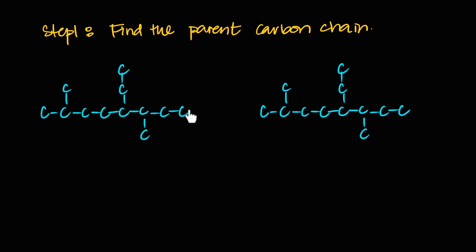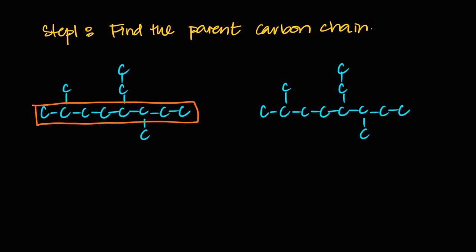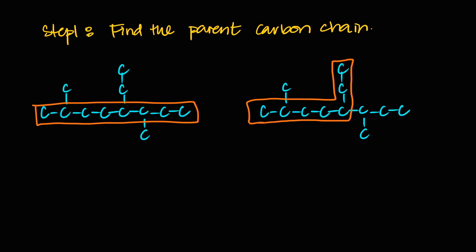For example, starting from one end I can count eight carbons, or seven another way, or seven a third way. The longest chain — highlighted here — is the eight-carbon path. The key point: it doesn't matter if the chain looks straight or has bends. What matters is the most number of carbon atoms you can trace from one end to the other without lifting the pencil.